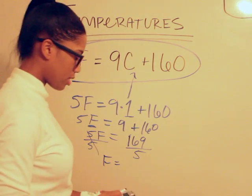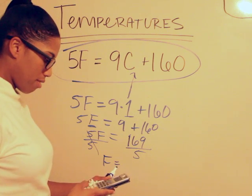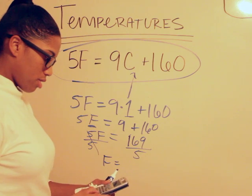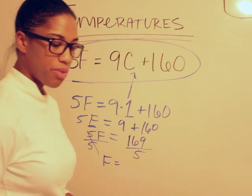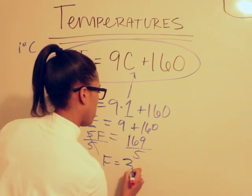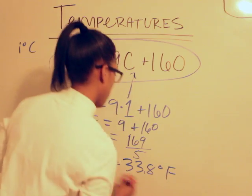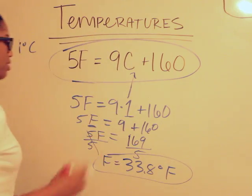So if we get our calculator and we say 169 divided by 5, that's going to leave us with around 33.8. So 33.8 degrees Fahrenheit and that's our answer.